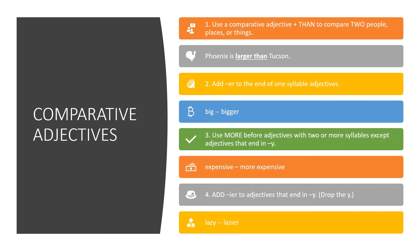In English, adjectives can be used to compare two nouns. When an adjective is used to compare two nouns, there are certain rules that are followed. Number one, you must always use than in your sentence. Phoenix is larger than Tucson. Number two, if the adjective has only one syllable, add -er to the end of it. Number three, if the adjective has two or more syllables, then you need to use the word more. You also need to include the word than. This computer is more expensive than that computer. For adjectives that end in y, drop the y and add -ier. He is lazier than his brother.